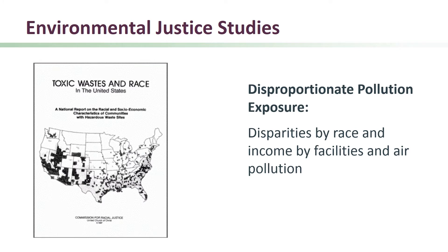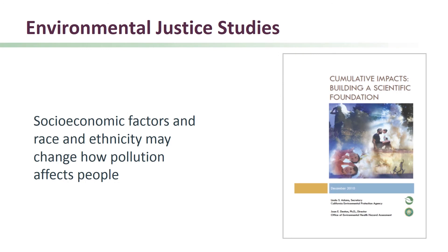Studies have also found disparities by race and income in the location of pollution-emitting facilities, and the levels of pollution in air. Emerging research suggests that socioeconomic factors, as well as race and ethnicity, may change how pollution affects the health of people. This research came out of environmental justice concerns among low-income and minority populations and is summarized in a 2010 report by OIHA entitled Cumulative Impacts: Building a Scientific Foundation.